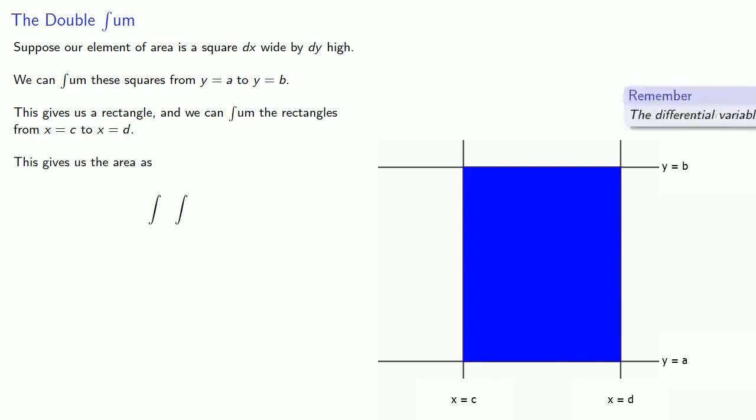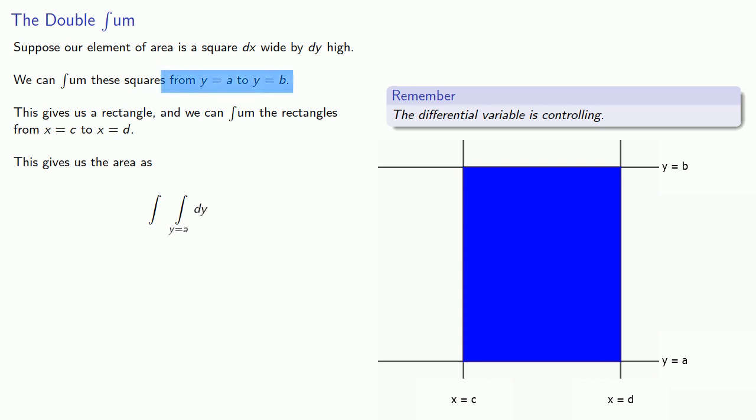Now to set that up, remember the differential variable is controlling. So our first sum changed y and went from y equals a to y equals b. Meanwhile, our second sum changed x and went from x equals c to x equals d.